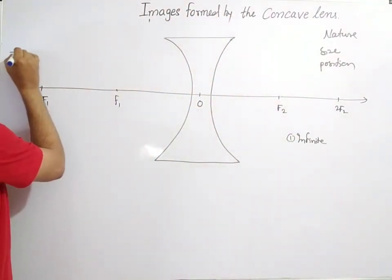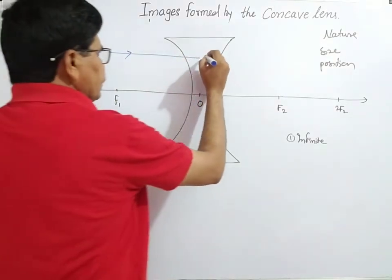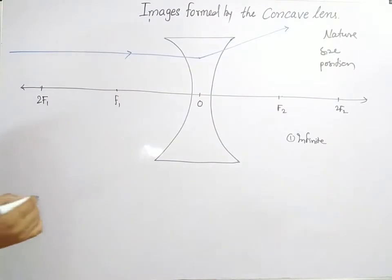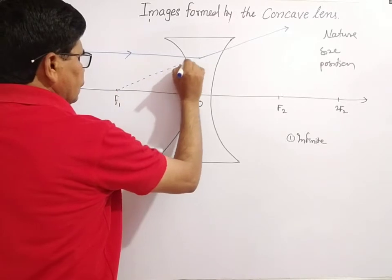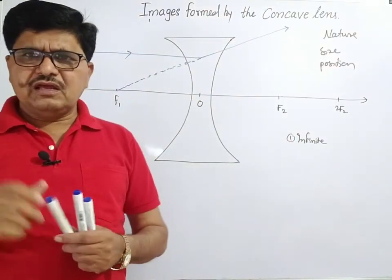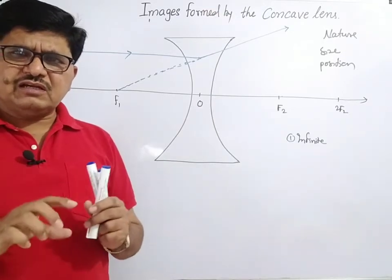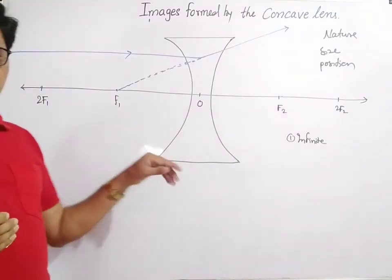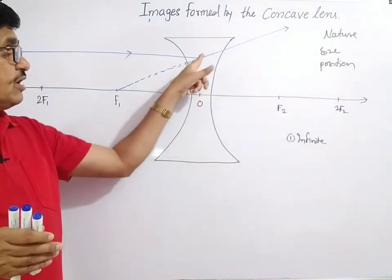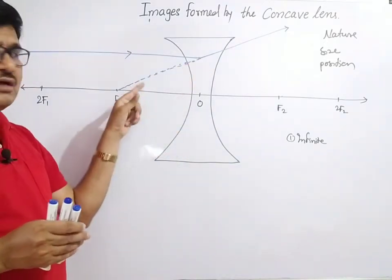Two rays can be considered. The first ray is parallel to the principal axis; after refraction through the concave lens, it will diverge. After refraction, the refracted rays diverge from each other — the distance between them increases and there is no possibility to meet together. You can extend the refracted ray backwards, and extending it backward, it will appear to pass through the focus.